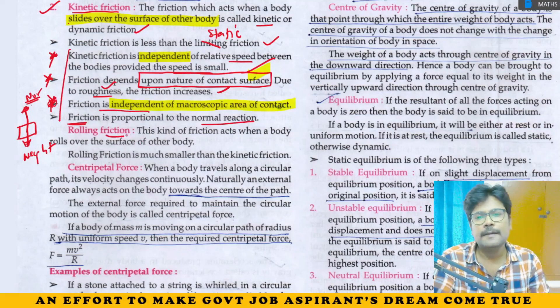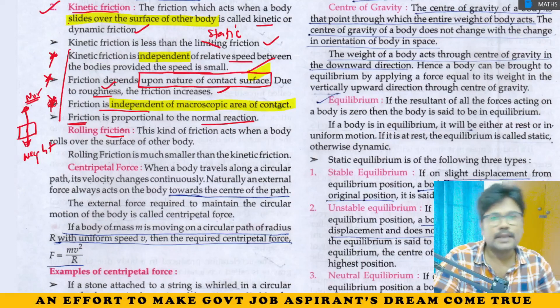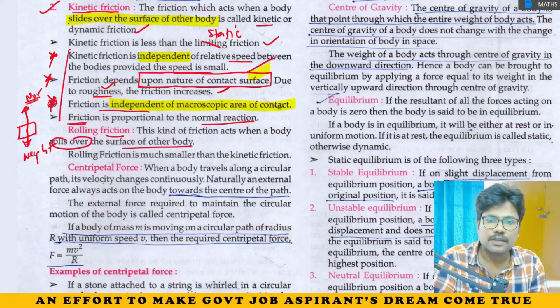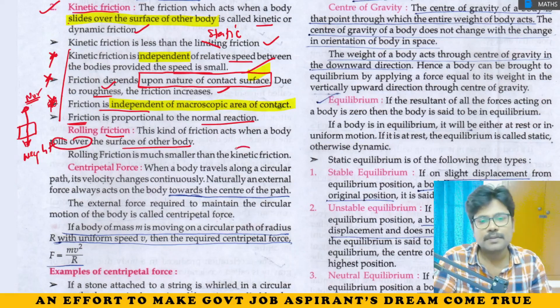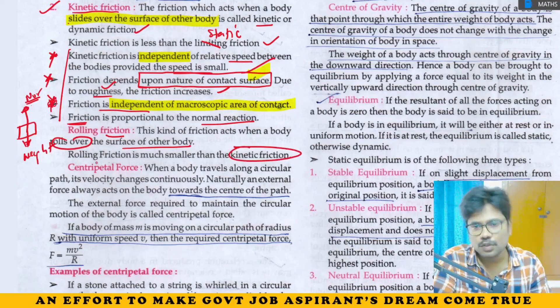Rolling friction occurs when one body rolls over the surface of another body. Rolling friction is very much less when compared with kinetic friction.